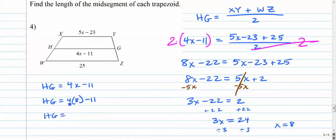HG is given as 4X minus 11. So it's 4 times 8 minus 11. 4 times 8 is 32. Minus 11 is... Let's see. 32 minus 11 is 21, right? Yeah, 21. So segment HG is 21 units long.